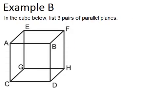Looking at example B, in the cube below, list three pairs of parallel planes. Remember, to be parallel means they should never intersect. For example, the face on the top would be parallel to the face on the bottom, because the faces of cubes are like planes if you extend them forever.